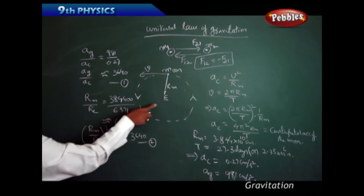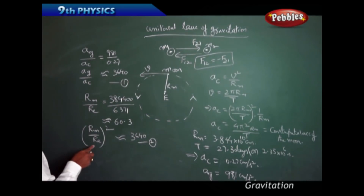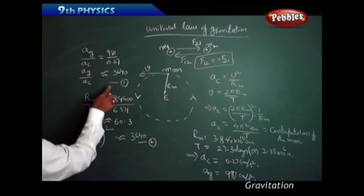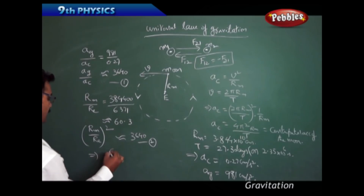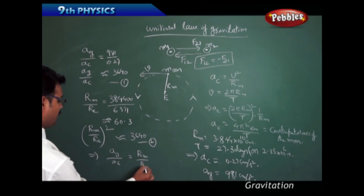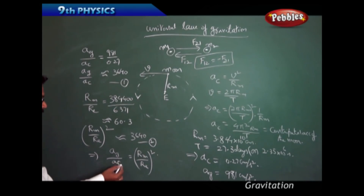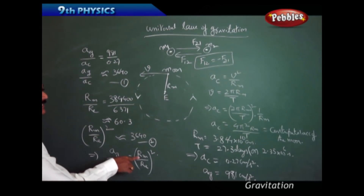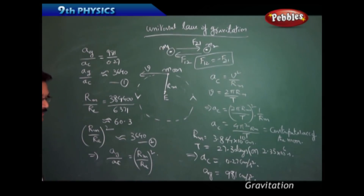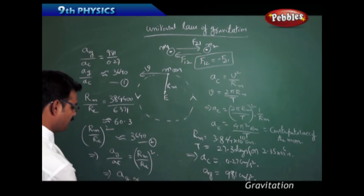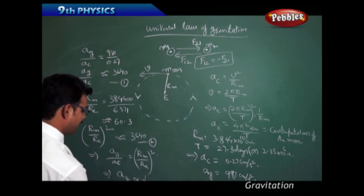So if you see these two expressions — equation 1 and equation 2 — r_m is the distance of the moon from the earth and r_e is the radius of the earth. Equation 1 equals equation 2, which implies: a_g / a_c = (r_m / r_e)². This means acceleration due to earth divided by acceleration of the moon equals the square of that distance ratio. So acceleration due to earth is inversely proportional to the square of the radius: a ∝ 1/r².